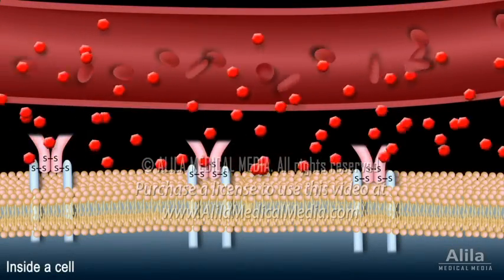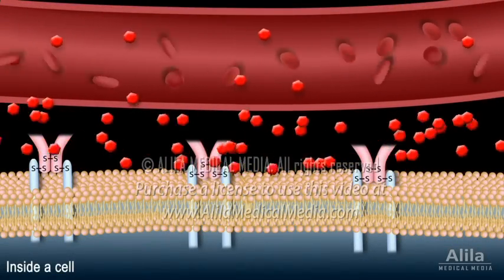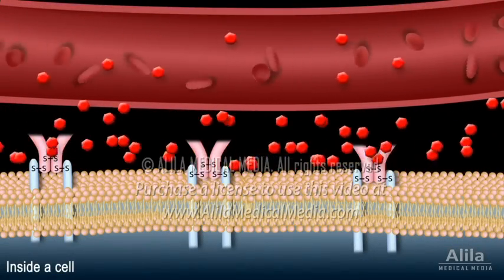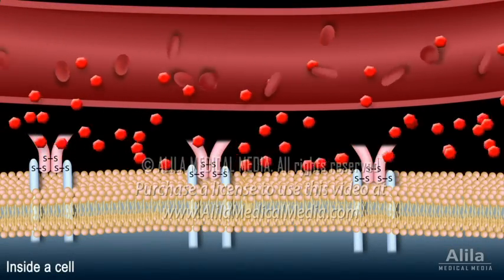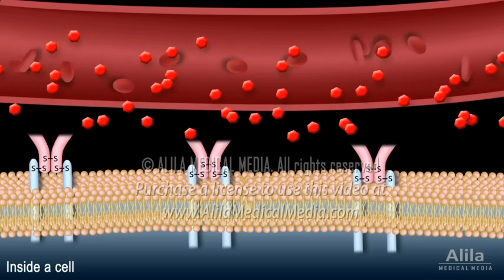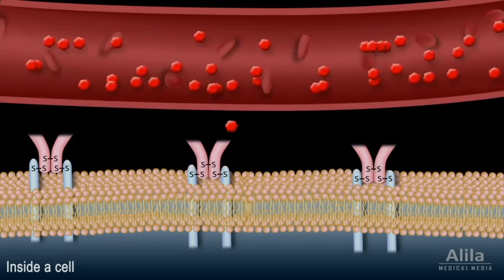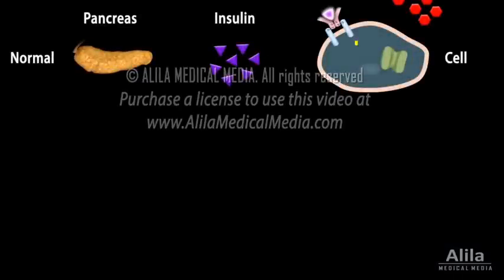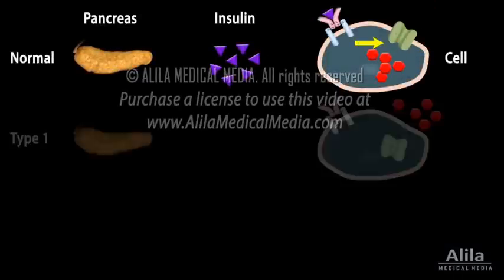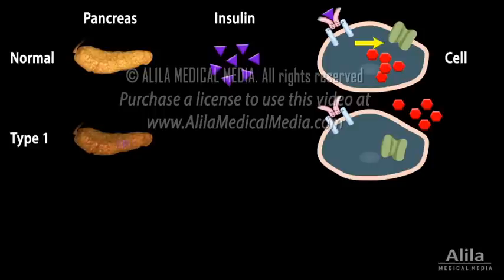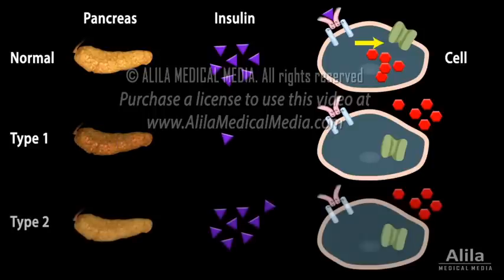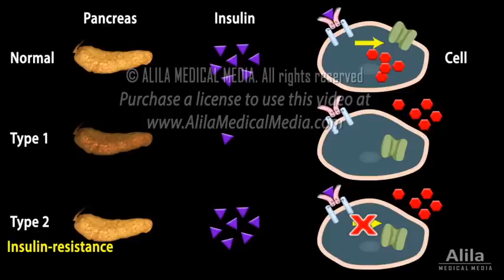Diabetes happens when insulin is either deficient or its action is compromised. Without insulin, glucose cannot enter the cells. It stays in the blood, causing high blood sugar levels. There are two major types of diabetes. Type 1 is when the pancreas does not produce enough insulin, and type 2 is when the body cells do not respond well to insulin — they are insulin resistant.